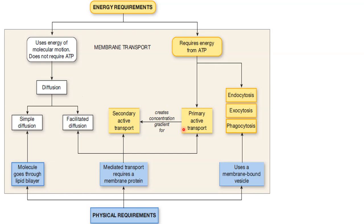Active transport requires ATP. There are two types. One uses carrier protein and requires ATP and carrier protein passing through it. Another type for very large molecules is endocytosis — if the thing is very large it cannot go through a carrier protein, so large molecules go through endocytosis, exocytosis, and phagocytosis. These are energy-driven processes requiring more energy directly.